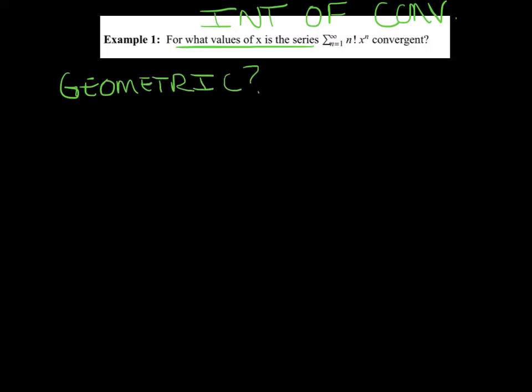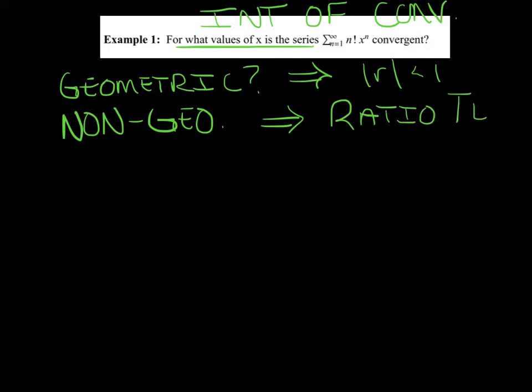All right, quick train of thought of what's going through my mind when I do see this particular question for what values of X is the series convergent. Basically, that's just an alternative way of asking us what is the interval of convergence. And the first thing I'm going to do is I'm going to say, hey, is it a geometric series? Because if it is, life just got a lot easier. And if it was geometric, we would say, well, the absolute value of R has got to be less than one, and now I don't even have to worry about the endpoints. It's super super easy. However, if it's non-geometric, which most of them are, then we're going to instantly go to our ratio test.